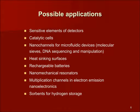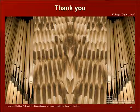Even the preliminary analysis of the box-shaped graphene nanostructure has shown good prospects of its use in various devices. Here are some of the possible applications: ultrasensitive detectors, high-performance catalytic cells, nanochannels of microfluidic devices, molecular sieving, DNA sequencing and manipulation, high-performance heat-syncing surfaces, rechargeable batteries of enhanced performance, nanomechanical resonators, electron multiplication channels in emission nano-electronic devices, and high-capacity sorbents for safe hydrogen storage.